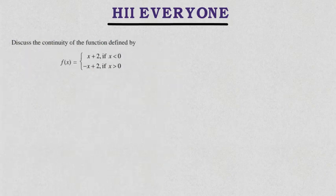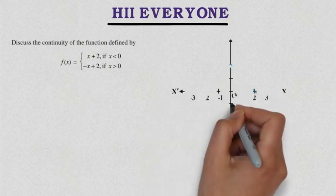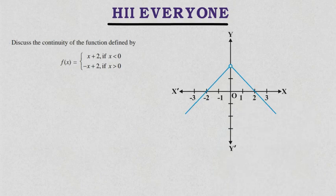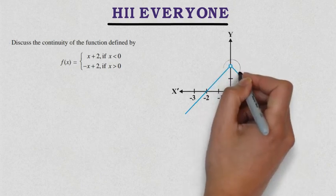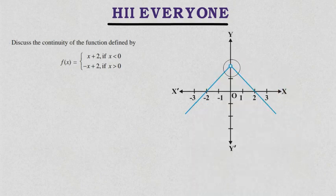We will discuss the continuity of the function defined by f(x) = x + 2 if x is less than 0, and f(x) = -x + 2 if x is greater than 0. First of all, we will draw the graph. You will see that in this graph there is a break, so this means the function is not continuous at 0.